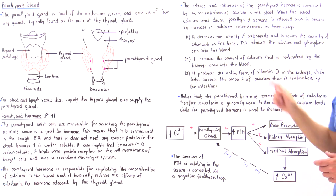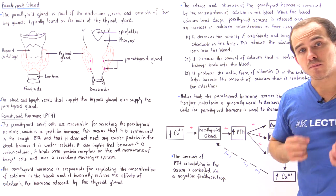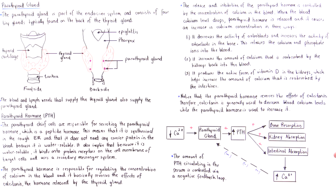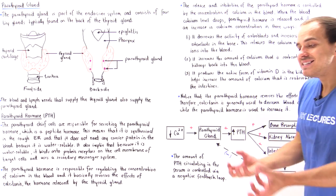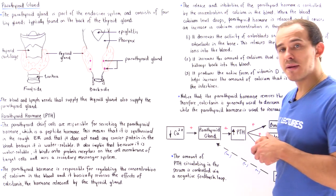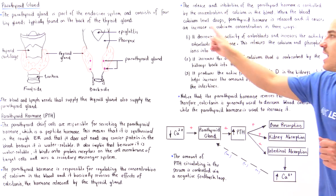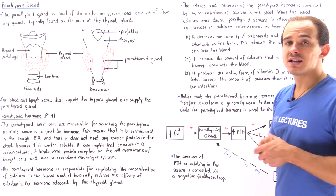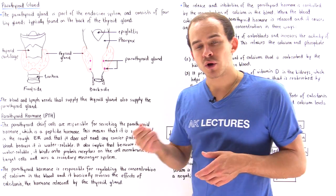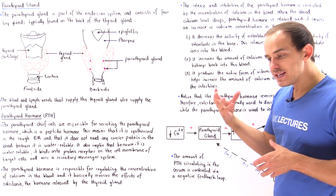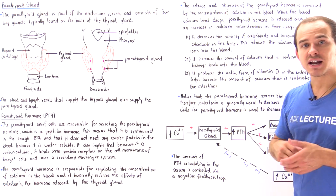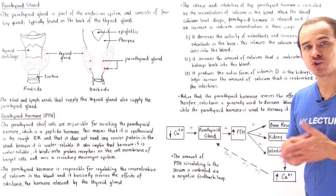Osteoblasts are those cells inside our bone that build the bone. They build bone matrix by taking calcium from the blood and using that calcium to build the matrix. On the other hand, osteoclasts are those cells in the bone that resorb the bone. They break down the bone by breaking down the bone matrix and releasing the calcium and the phosphate ions into our blood.